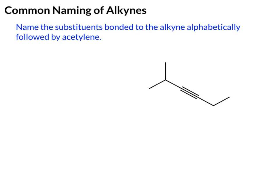The general strategy for the common system is to name the substituents bonded to the alkyne alphabetically, followed by the term acetylene. That is based on acetylene, which is this two-carbon alkyne.